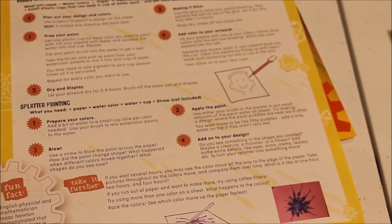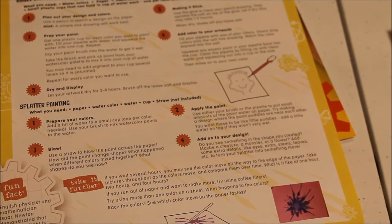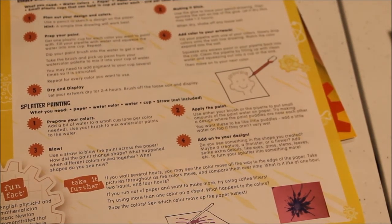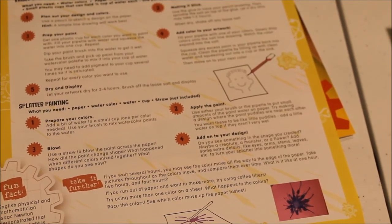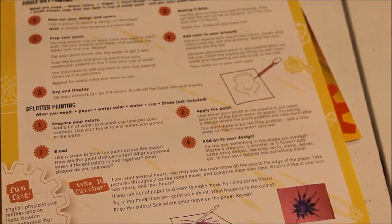Step four says add on to your design. Do you see something in the shape you created? Maybe a creature, a monster, or a flower. Add some extra details like eyes, arms, stems, and leaves to turn your splatter into something more. That could have actually been really fun if I had a straw.